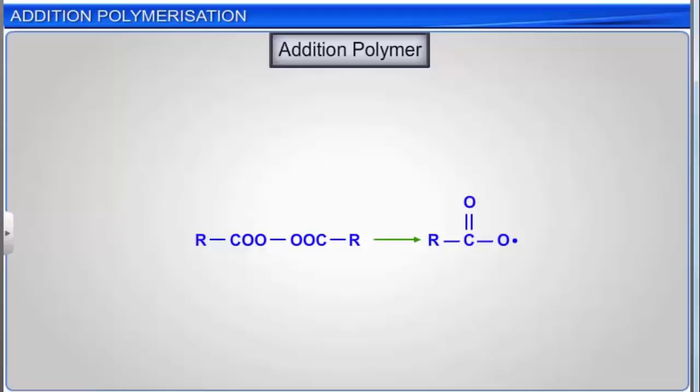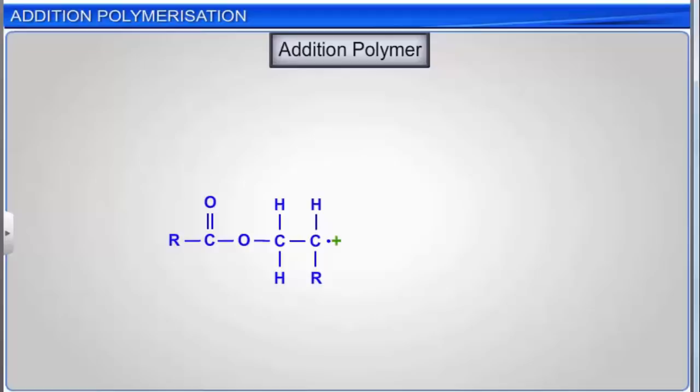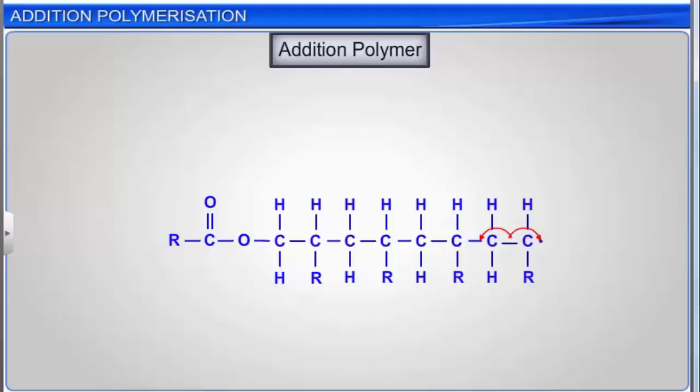Addition polymerization involves a series of reactions, each of which utilizes a reactive particle such as a free radical, and produces another similar reactive particle. Thus, free radicals induce a chain reaction. This mode of polymerization leads to an increase in the length or growth of the chain, hence the name chain growth polymerization.